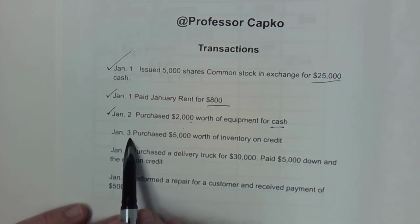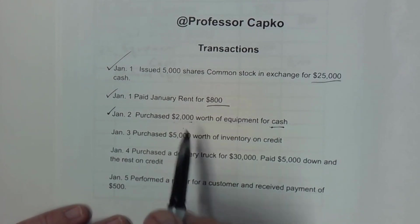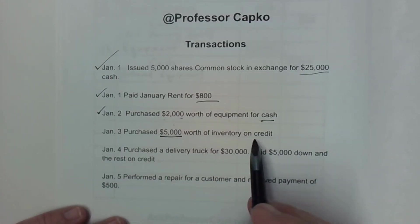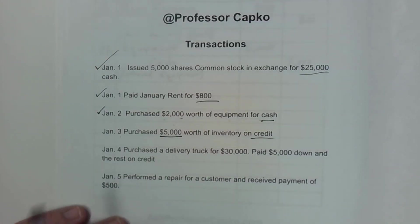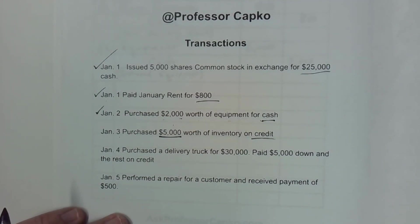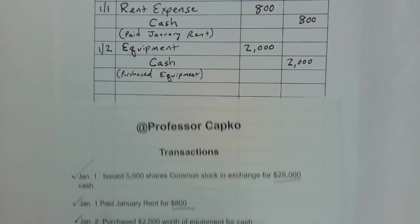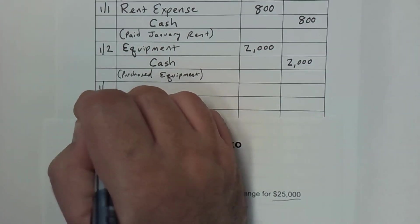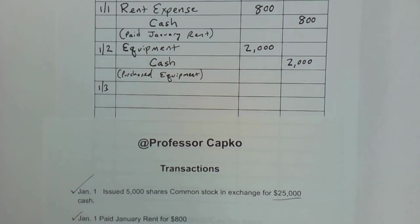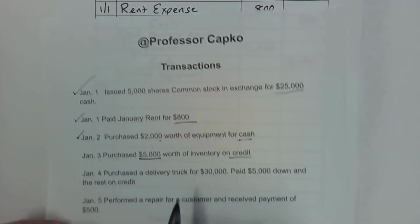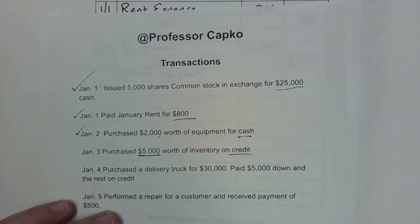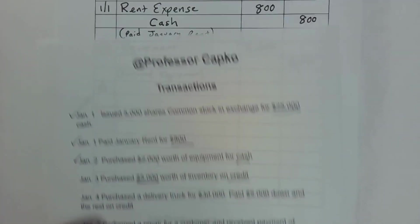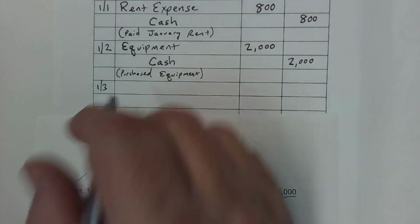The next one is on January 3rd. We purchased $5,000 worth of inventory on credit. On credit — so there's no cash involved in this transaction. I'm going to put the date down: 1-3. And we purchased the inventory, so the inventory is coming to us.